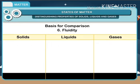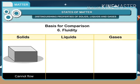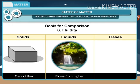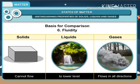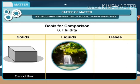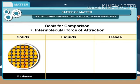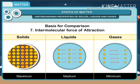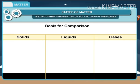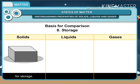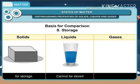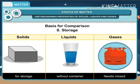Six — fluidity: solids cannot flow; liquids flow from higher to lower level; gases flow in all directions. Seven — intermolecular force of attraction: maximum for solids, medium for liquids, minimum for gases. Eight — storage: solids don't need a container for storage; liquids cannot be stored without a container; gases need a closed container for storage.